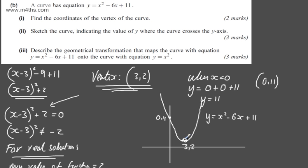In the third part for 3 marks, we're asked to describe the geometrical transformation that maps the curve with equation y = x² - 6x + 11 onto the curve with equation y = x². Just consider what we did to go from the origin. We move right by 3 and up by 2. So these were translations.